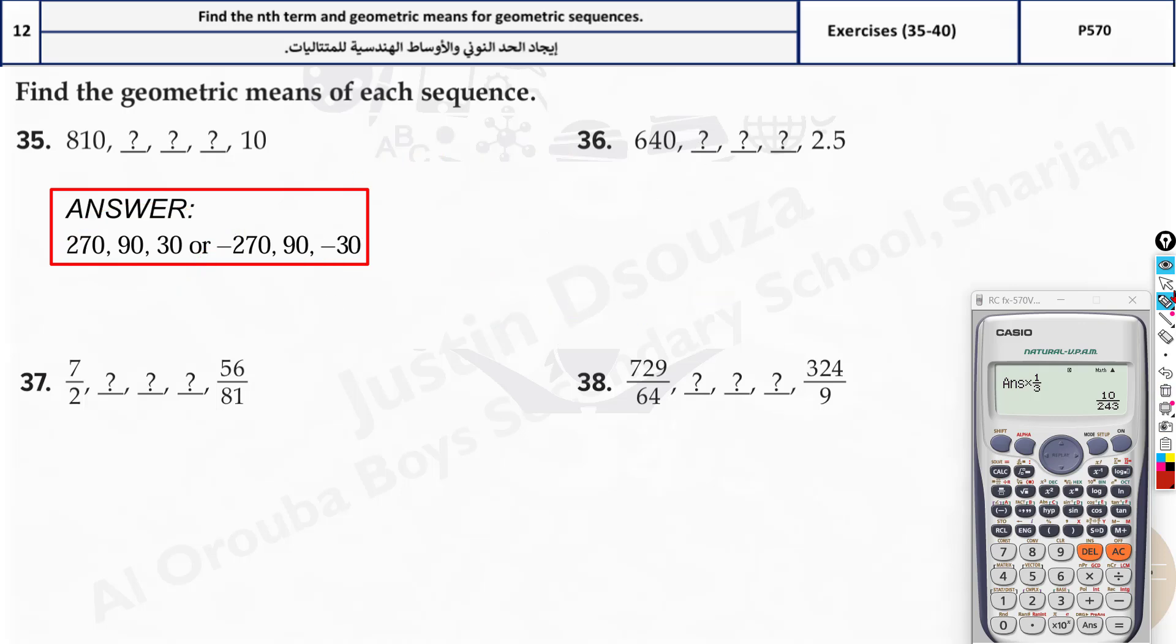We'll do one more problem here. Let's do a difficult one, last one over here. So first one, a_1, a_N. And there are five terms. N is equal to 5. So we'll substitute the first formula. a_5 is equal to a_1, that is 729 divided by 64, multiplied by r to the power 5 minus 1. So it is 324 divided by 9 is equal to 729 divided by 64 r to the power 4.